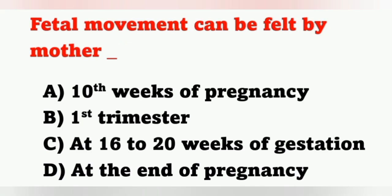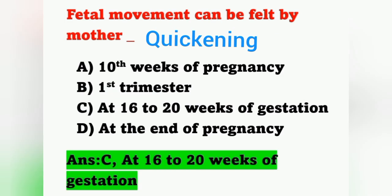The next question: fetal movement can be felt by the mother at — options: A: 10th week, B: first trimester, C: 16 to 20th week of gestation, D: end of pregnancy. Fetal movement can be felt by the mother at about the 18th week, within the range of 16 to 20 weeks of gestation. This first fetal movement felt by the mother is known as quickening.